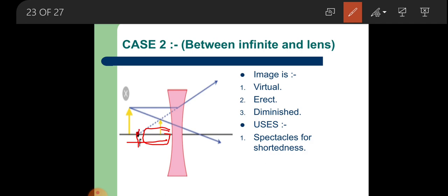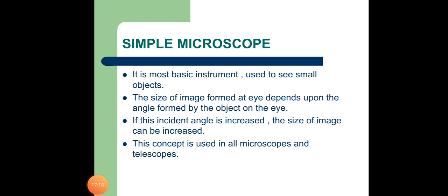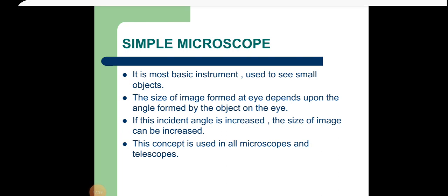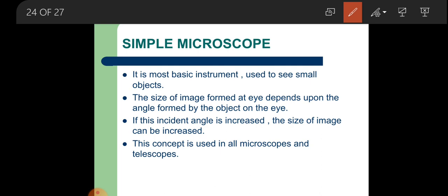Our concluding topic of this chapter is the simple microscope. The simple microscope is the most basic instrument used to see small objects.